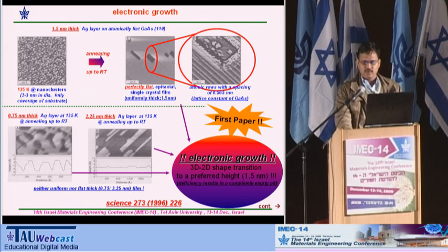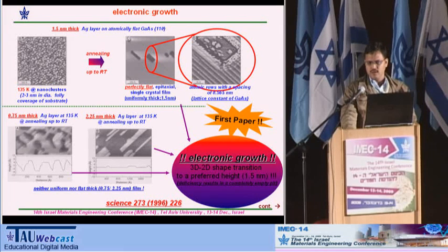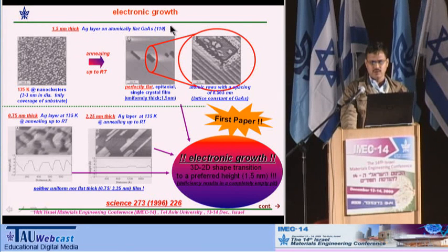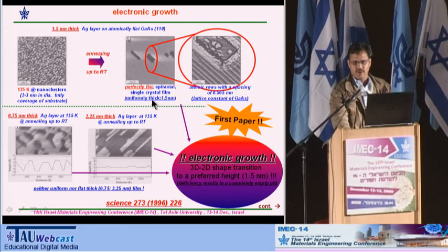As far as electronic growth is concerned, perhaps the first paper came in 1996 by Smith et al., published in Science. They made a deposition of silver metal of 1.5 nanometer thickness on a gallium arsenide 110 substrate at 135 K. After deposition, they annealed it up to room temperature and found a perfectly flat epitaxial single crystalline film.